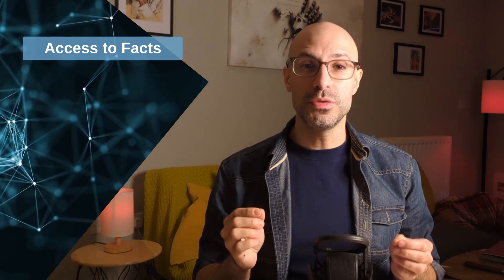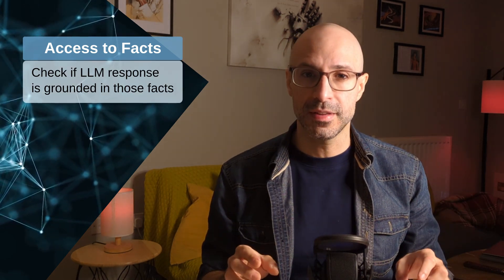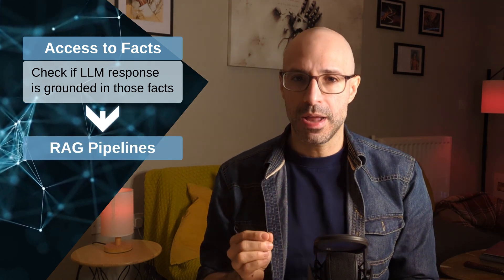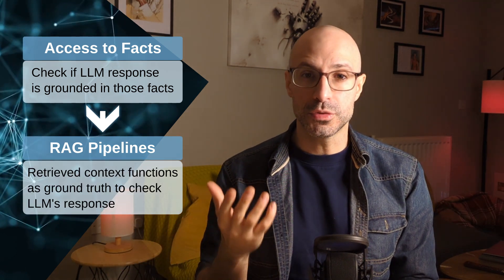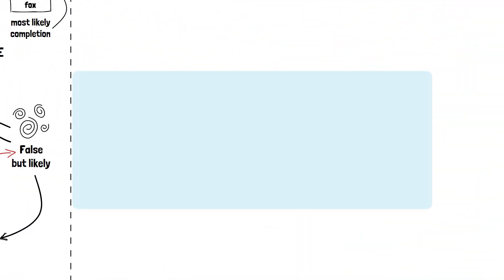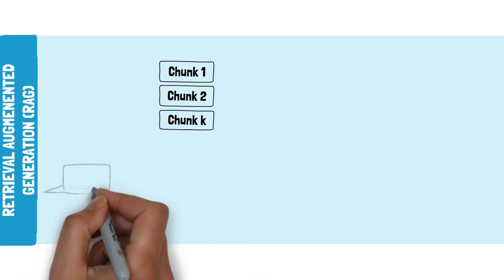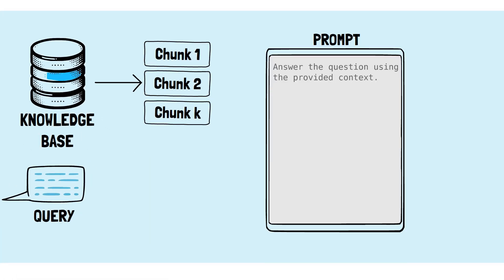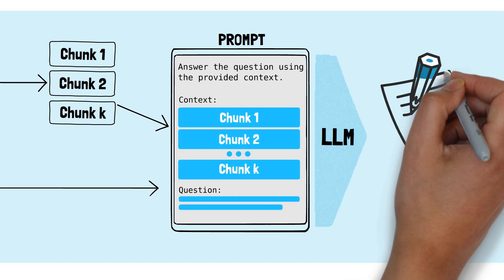We can do this by checking if the LLM's response is grounded in those facts. And this is exactly the situation we are in when we build RAG pipelines, as the context we retrieve can function as the ground truth to check the LLM answer. In a RAG setup, an application retrieves document chunks relevant to a user's query by looking into a knowledge base, and the LLM is then prompted to use the retrieved context to generate a response to the query.